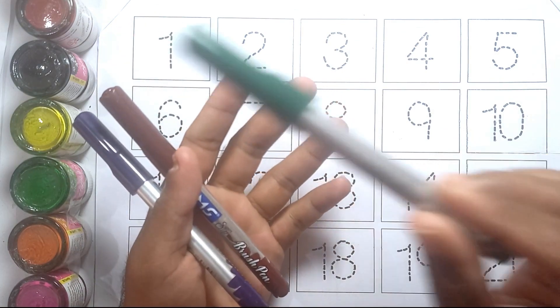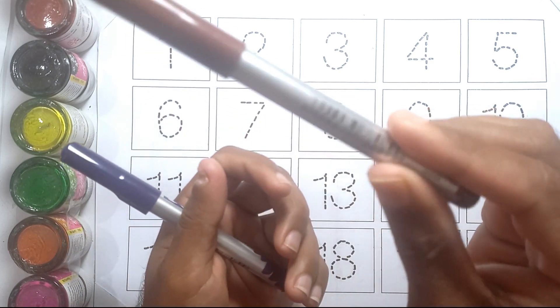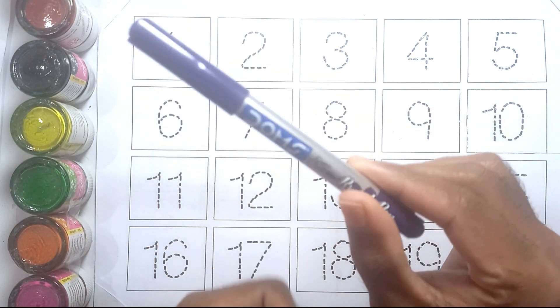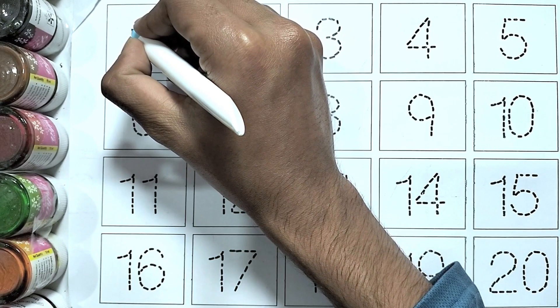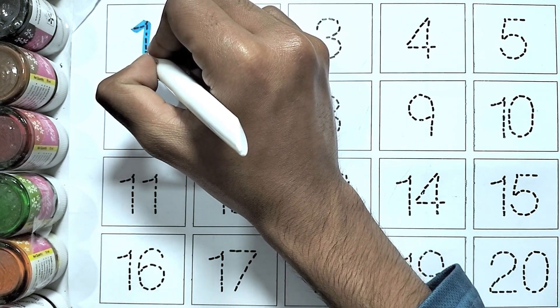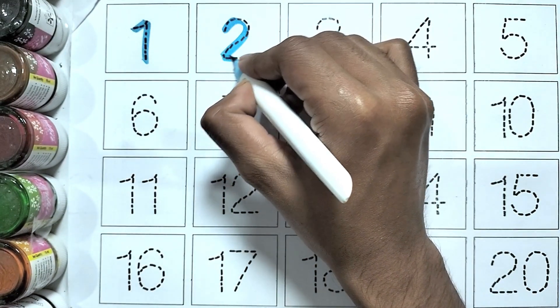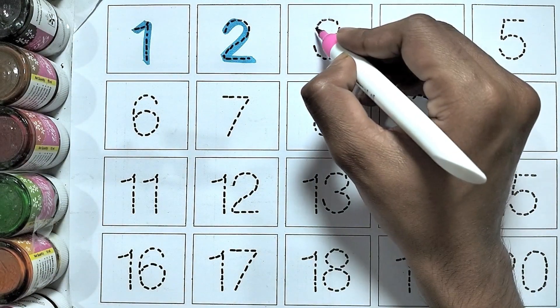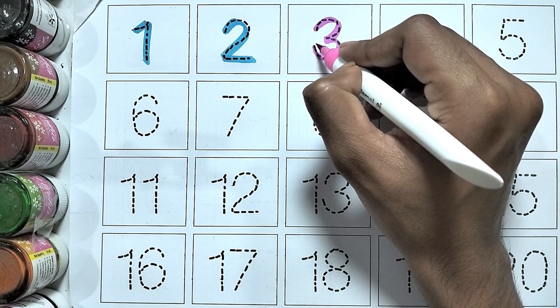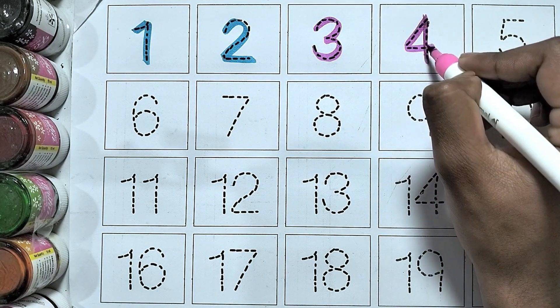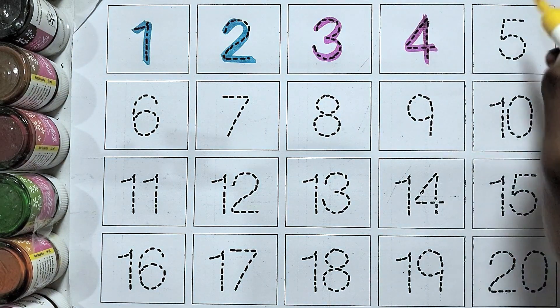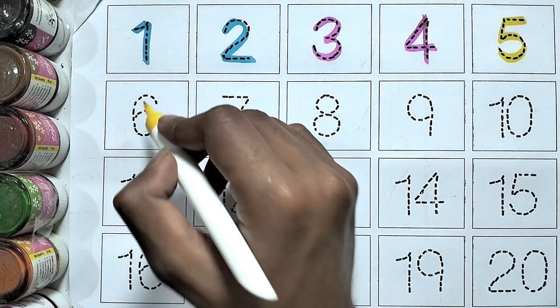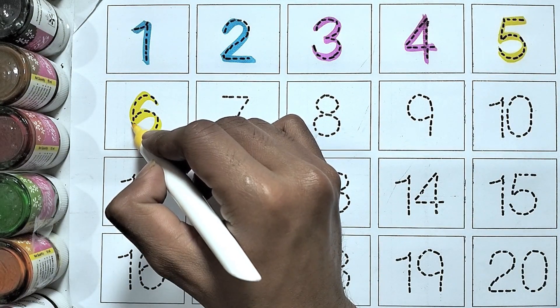Sea green color, chocolate color, purple color. One, two, three, four, five, six.